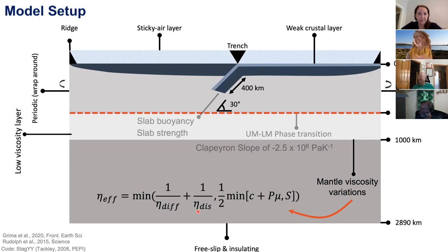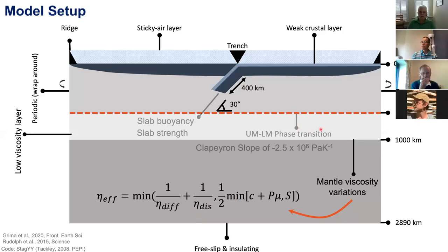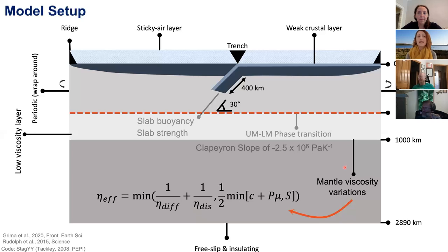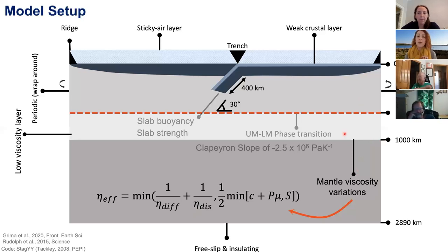What you're currently seeing is our initial model setup. We have the ringwoodite-to-bridgmanite and ferropericlase phase transition, and a mantle viscosity structure based on inversions from Rudolph and co-workers from 2015. This gives a low viscosity layer between 660 and 1000 kilometres depth, and an increase in viscosity at 1000 kilometres. In this cartoon, darker shades of gray indicate more viscous regions of the model.